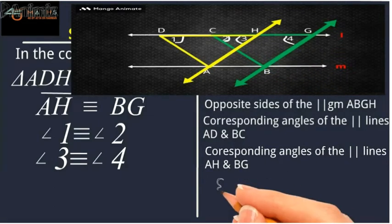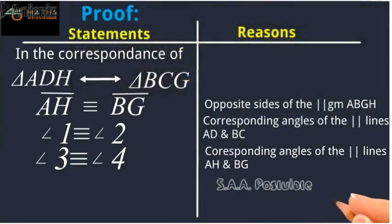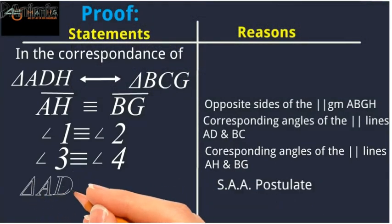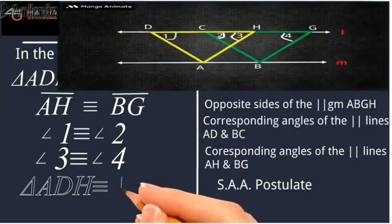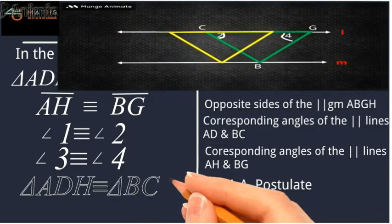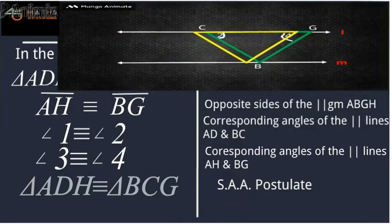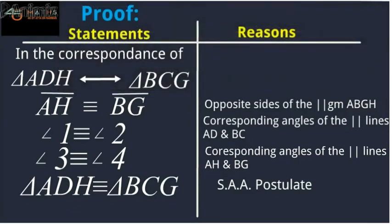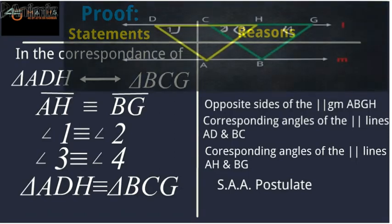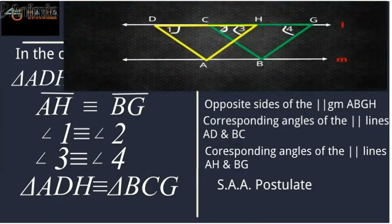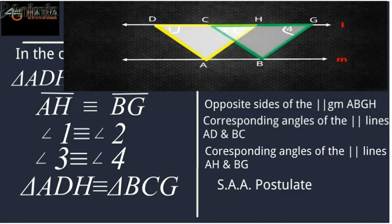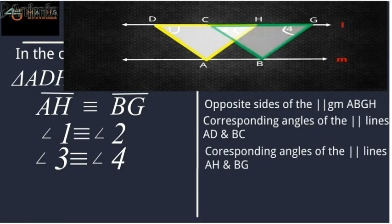Hence, by the side-angle-angle postulate, triangle ADH is congruent to triangle BCG. In other words, both triangles have the same area because they are congruent — and we know that if two triangles are congruent, then they will have the same area.